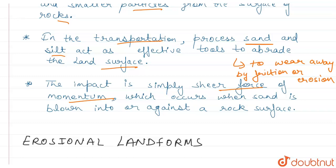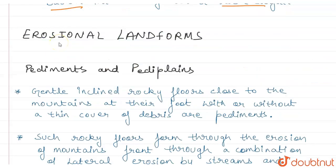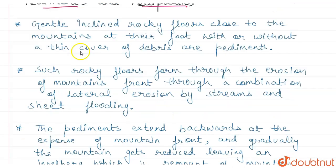When sand is blown from one place to another, the impact is shear force. Now let's talk about wind erosion landforms. The first is pediments and pediplanes. Gently inclined rocky floors close to the mountains at their foot, with or without a thin cover of debris, are called pediments.